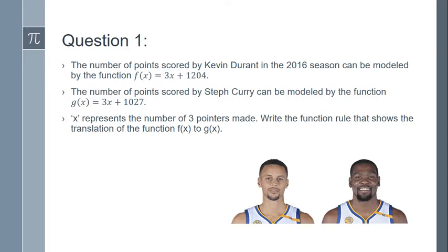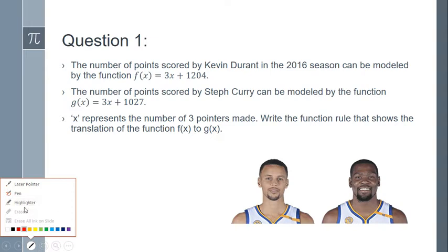From the previous part of the project in Lesson 19, we talked about how these were the functions that represented the scoring by each of these players, where x is the number of three-pointers made. And then this 1204 and this 1027 represent all the points made from two-pointers and one-pointers. If we were to graph these, it's asking about a translation.